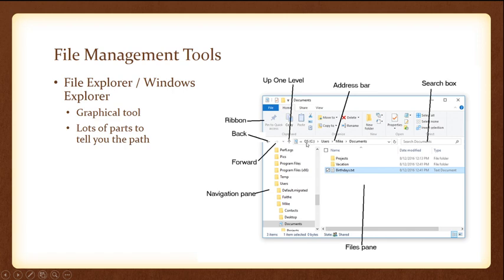The address bar shows clickable links — the OS, users, mic, documents are all clickable. You can also see the full path when you click off of it. There's a back button and a forward button. Up at the top, you've got the ribbon, which is where you can do additional options. And there's a search box on the side where you can search for a specific document — if you had hundreds of files in the pane, it would narrow them down.